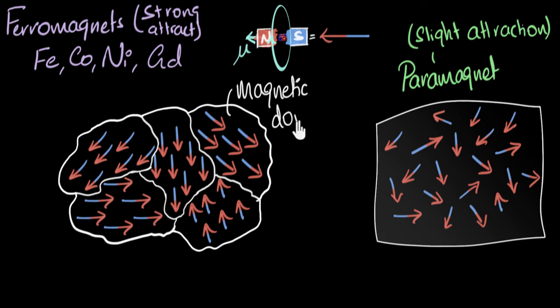So that is the big difference between paramagnets and ferromagnets. Although at an atomic level they look the same, they both have magnetic moments, at a macro level you have magnetic domains inside these ferromagnets.